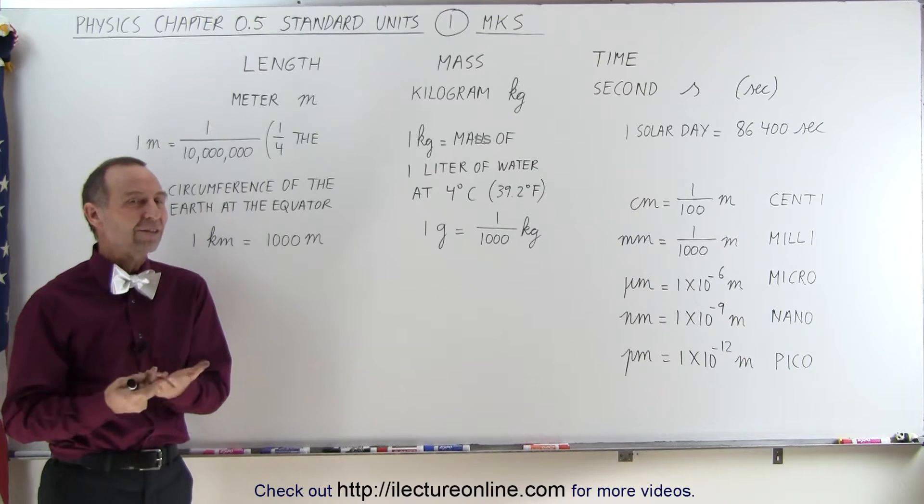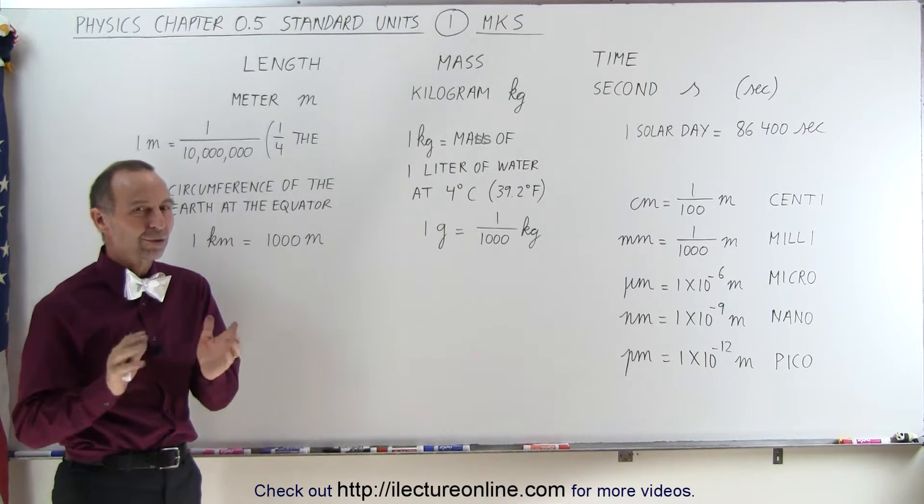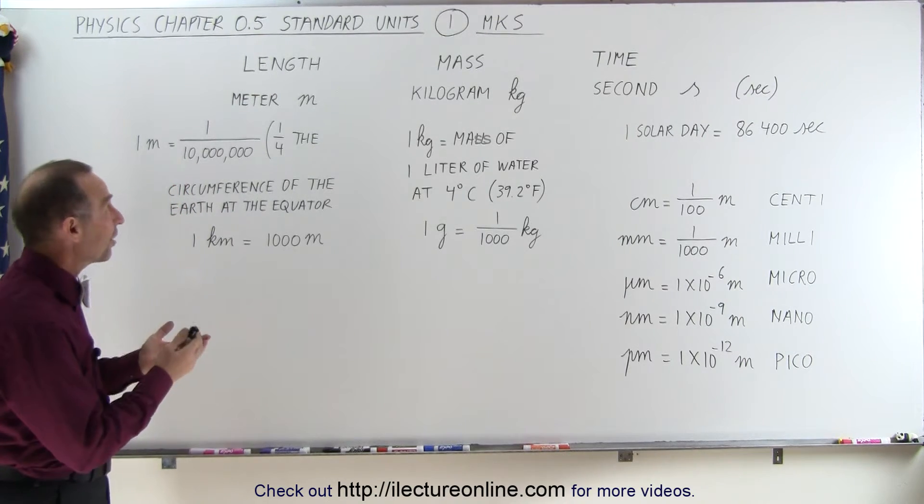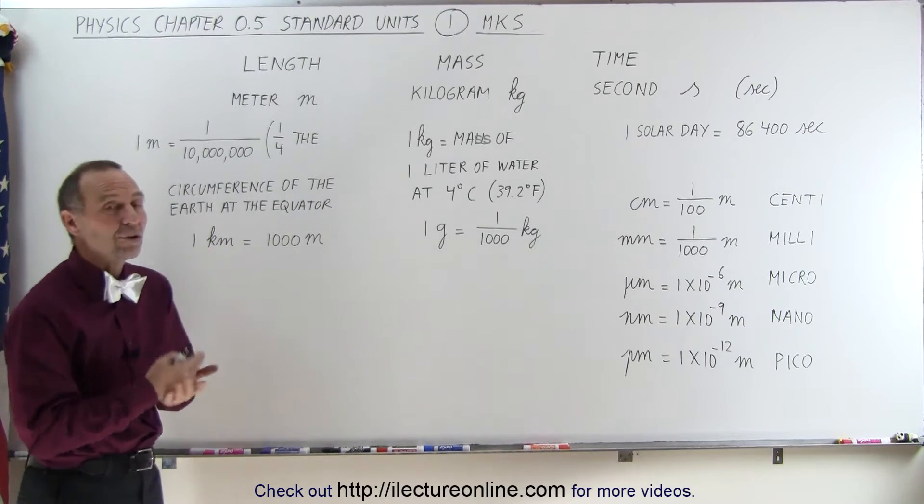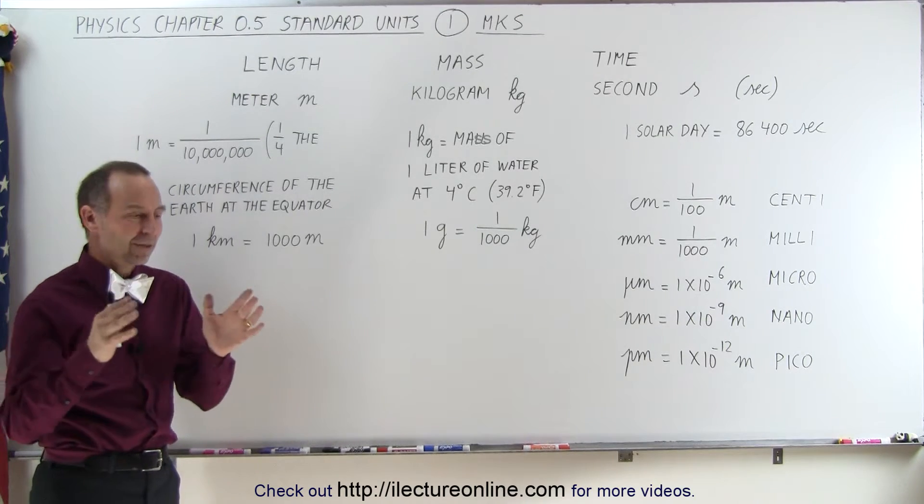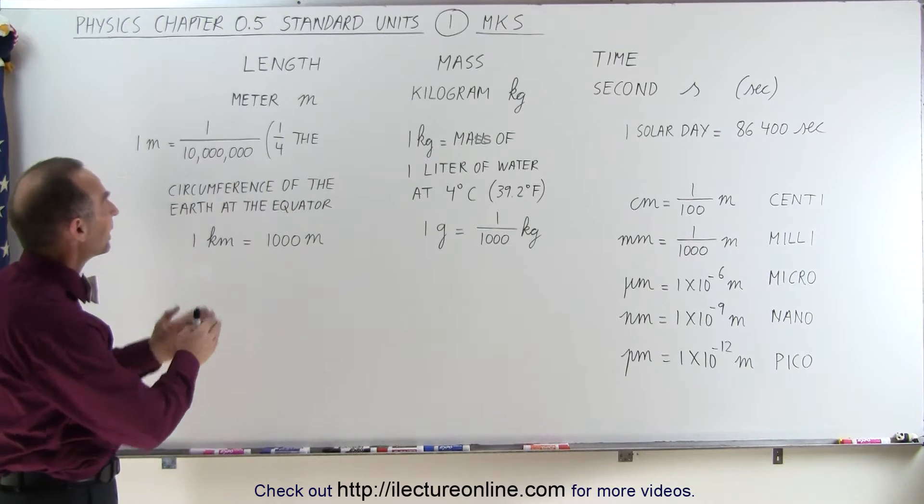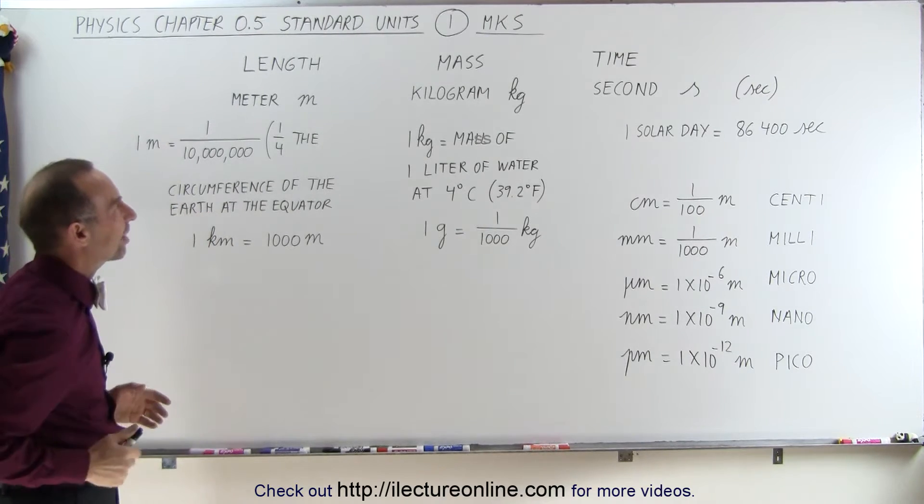Now, later on, when we get into electricity and magnetism, there may be one or two more, as you will see. But it turns out that most of all of the units can be simplified or reduced down to simply length, mass, and time.